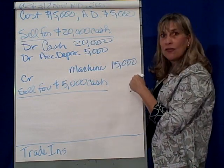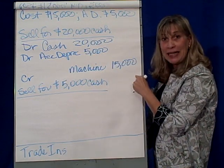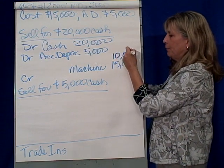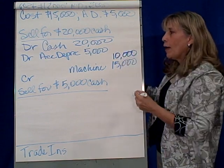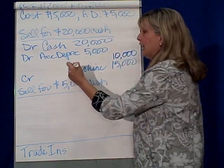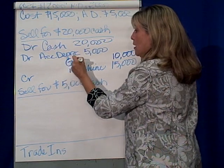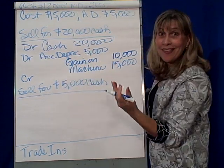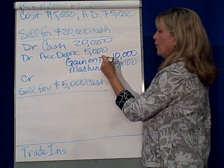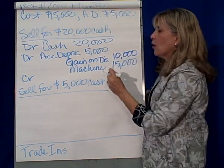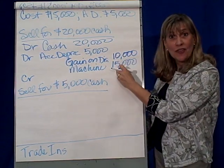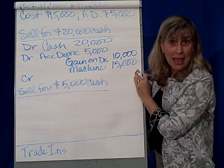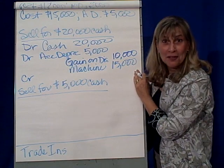I've got credits of $15,000, so I need another credit of $10,000. What this is called is a gain on disposal — or a gain on sale — either way, you can call it gain on disposal or gain on sale. And that makes it balanced.